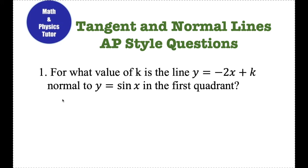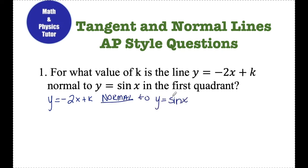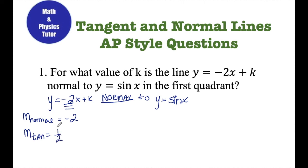Number one asks: for what value of k is the line y equals negative 2x plus k normal to y equals sine x in the first quadrant? So I have a line y equals negative 2x plus k and I need this line to be normal to the curve y equals sine x. If this line is normal to sine x, I want to pull out the slope of this line. The slope of the normal line is negative 2. The slope of the tangent line and normal lines are opposite reciprocals.